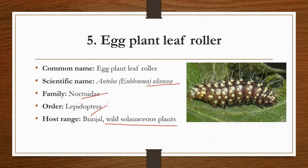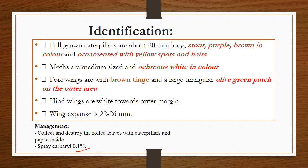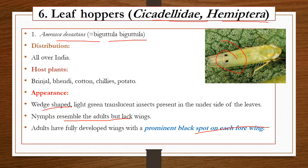The egg plant leaf roller, also known as brinjal leaf roller, belongs to the family Noctuidae, order Lepidoptera. Its scientific name is Eublema olivacea. The host range includes brinjal and other wild Solanum species. Management includes collection and destruction of rolled leaves with caterpillars, and spraying carbaryl at 0.1% per liter.